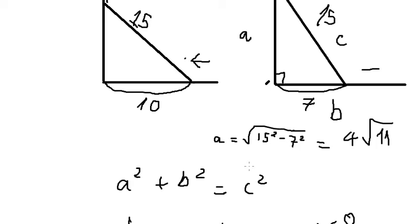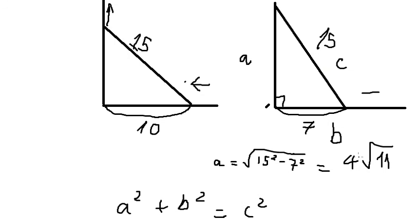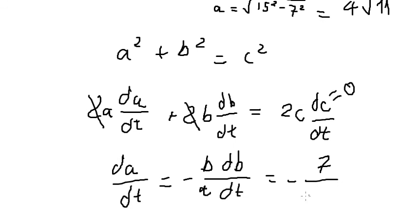A is about 4 multiplied with the square root of 11, and we have negative 1 over 4.